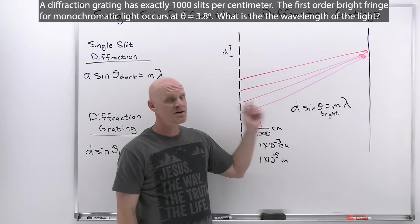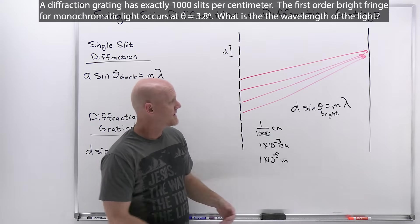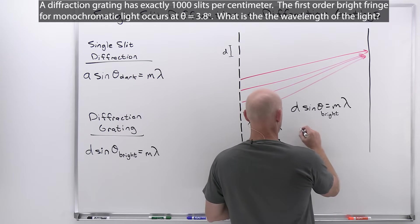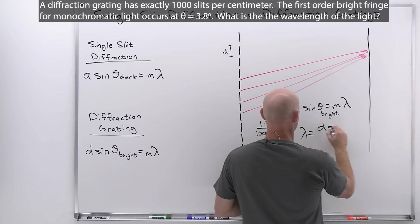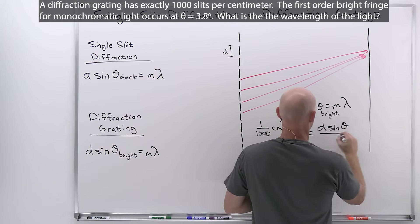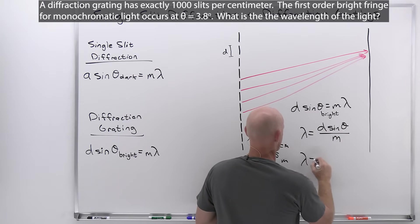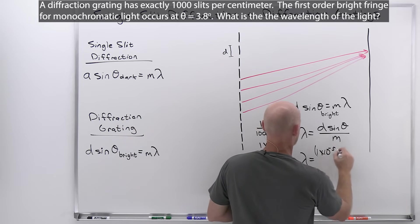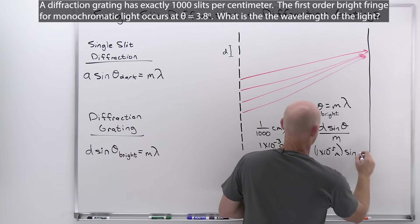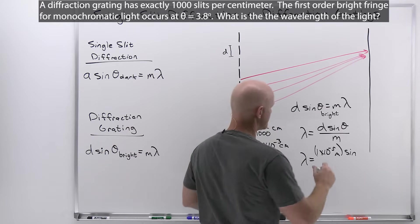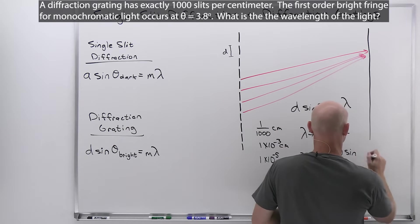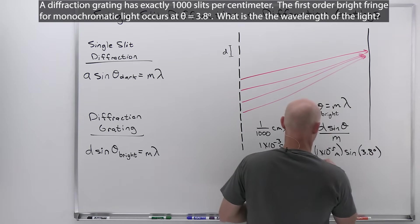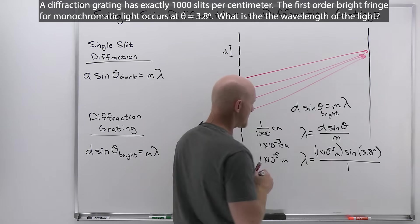Converting to SI units, lambda equals d sine theta over m — which is 1 times 10 to the negative 5 meters times the sine of 3.8 degrees, all over m equals 1.